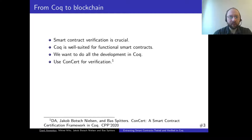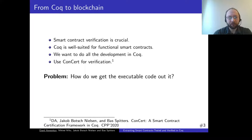Smart contract verification is crucial, and Coq is well suited for functional smart contracts since it is basically a dependently typed functional programming language. We would like to do our development and verification in Coq. For verification, we have the ConCert framework which we presented at CPP last year. But the question is, how do we get executable code out of it?